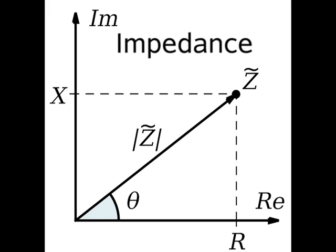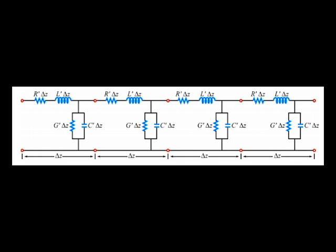While every conductive line has intrinsic resistive properties, alternating current causes another type of impedance called reactance that causes further losses in the lines. This is due to the inductive and capacitive properties of the line.